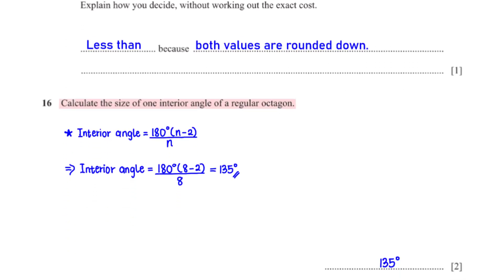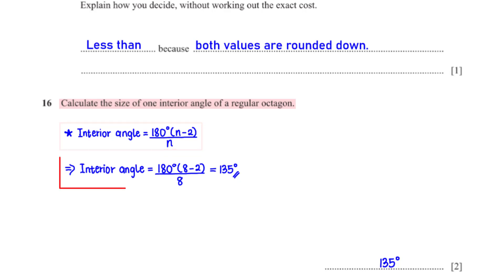Calculate the size of one interior angle of a regular octagon. Here is the formula for the size of an interior angle in a regular polygon, where n is the number of sides of the polygon. An octagon has eight sides, so we plug in n equals 8 into the formula. This gives us 135 degrees.